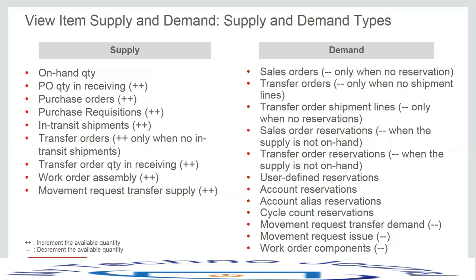The view item supply and demand feature is for reviewing the supply and demand picture, considering various types of supplies and demands. The available quantity column reflects a running total based on the supply and demand type for each row. Plus and minus indicators next to document types show whether the available quantity is incremented or decremented. Since reservations are already reflected in the on-hand quantity, there is no impact on available quantity for such demand types.